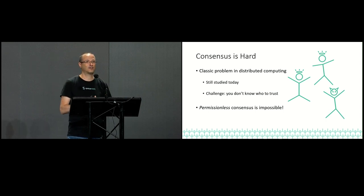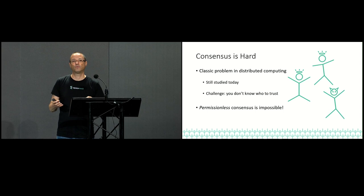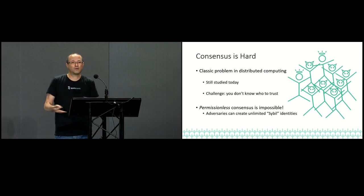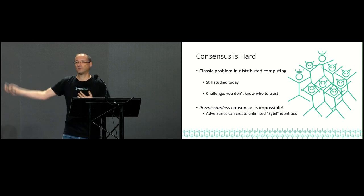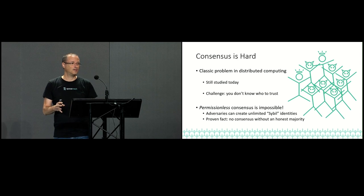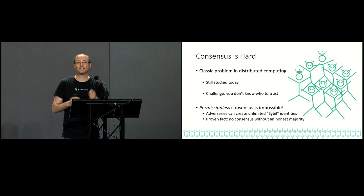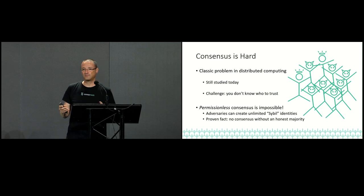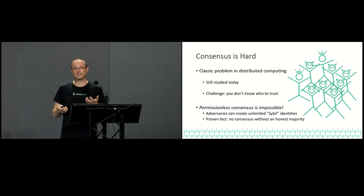Classic consensus is hard. Permissionless consensus, where we don't have fixed identities, is just impossible. The reason is that adversaries can create many Sybil identities — if we don't have fixed identities, I can just duplicate myself as many times as I want. There's a mathematical proof from the 80s that if we don't have an honest majority, it's just impossible to get consensus. And if adversaries can duplicate themselves as many times as they want, there's no way to get an honest majority.